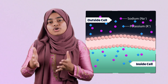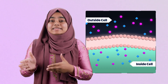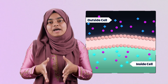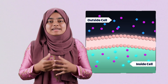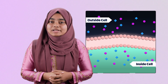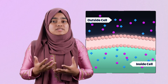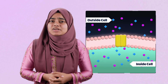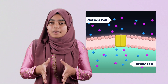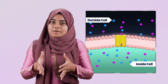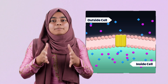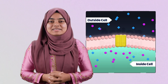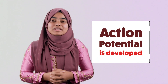Outside the neuron, or in the extracellular fluid, sodium ion is present in higher concentration. Conversely, potassium ion is more concentrated inside the neuron. Usually, the cell membrane of the neuron does not allow free movement of ions through it. But in response to any stimulus, the permeability of the membrane will increase, allowing sodium ions to enter the neuron and potassium ions to exit. As a result, action potential is developed within the neuron.